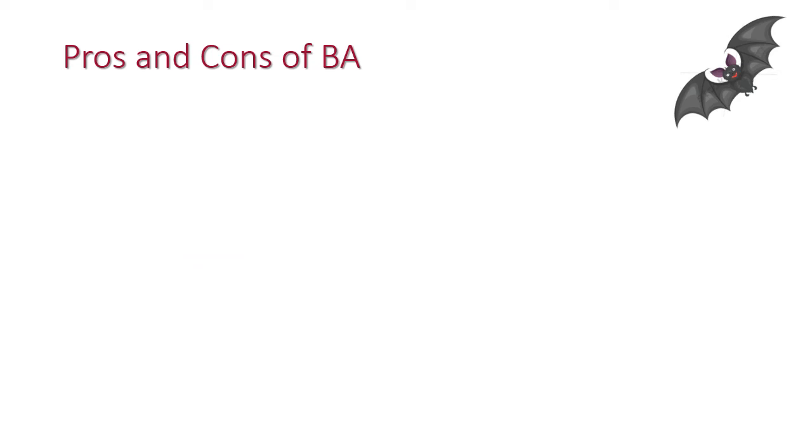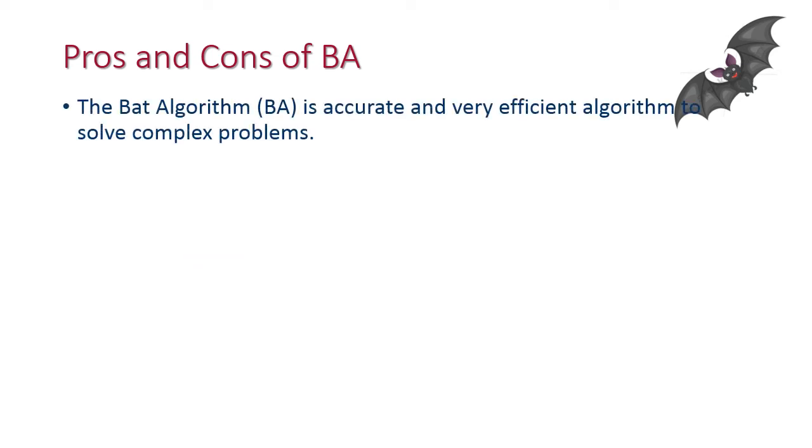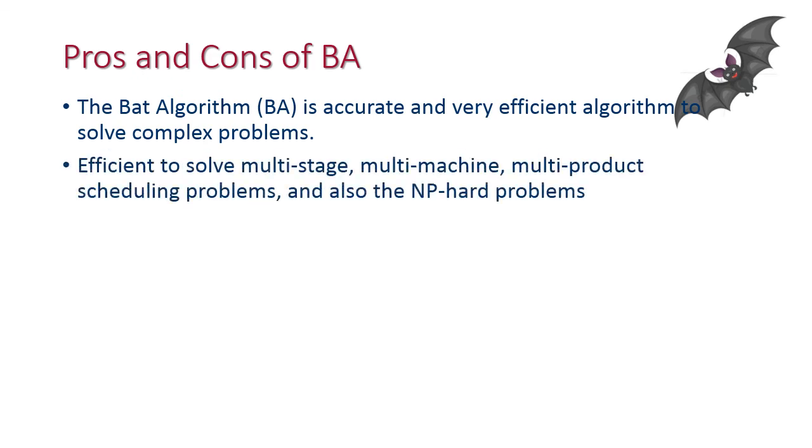Pros and cons of bat algorithm: The bat algorithm is accurate and very efficient algorithm to solve complex problems in almost every area of optimization problems, scheduling problems, classification, image processing, feature selection, data mining, etc.